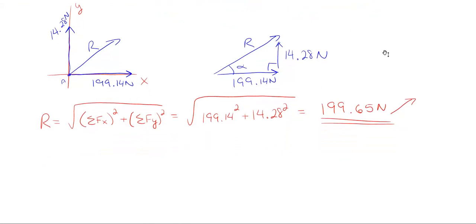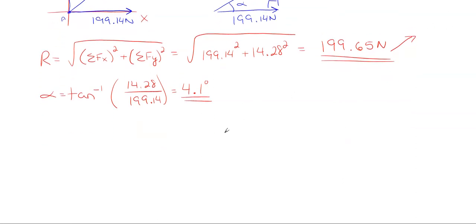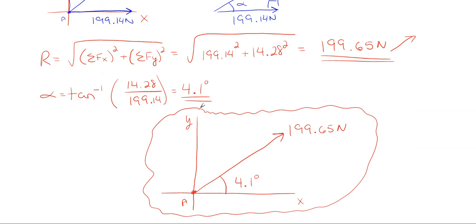To find the angle, use the right triangle: α = tan⁻¹(14.28 / 199.14) = 4.1° off the x-axis. For a complete final answer, redraw the axes, mark point A, and show the resultant of 199.65 N at 4.1° above the horizontal to the right. This leaves no ambiguity for grading.